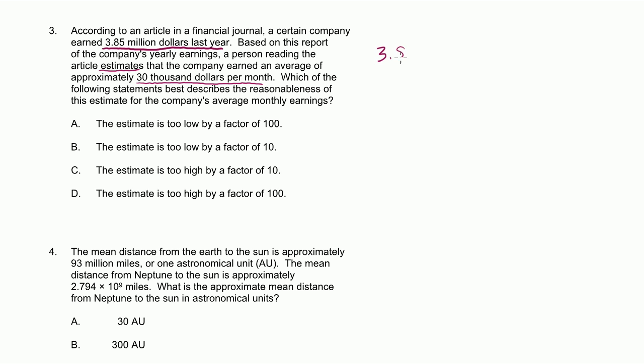3.85 million dollars last year, and then we want to be able to estimate the monthly earnings. So we want to divide 3.85 million by 12 months, right? That's 3.85 million a year and we want to divide it by 12. We could do the exact number, but we could say this is pretty close to 3.6 million. The reason why I'm picking 3.6 million is because 36 is 3 times 12.